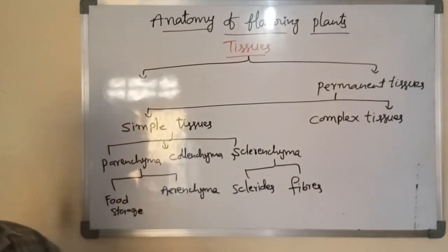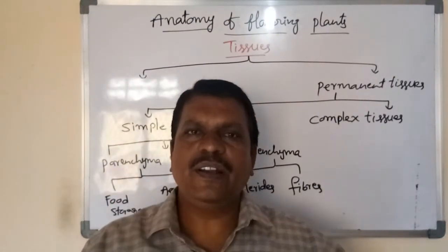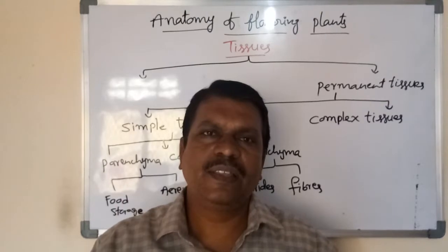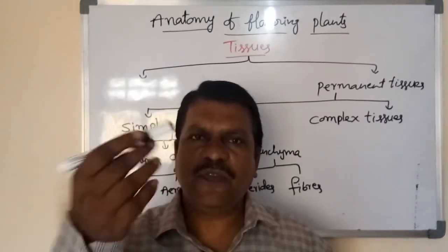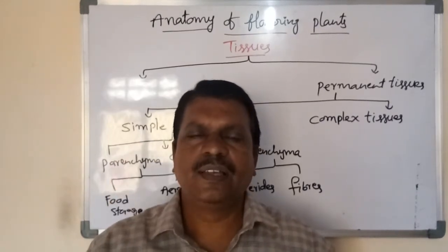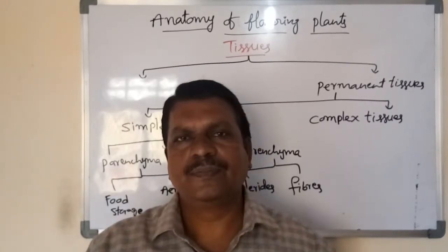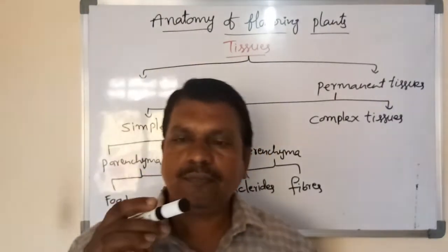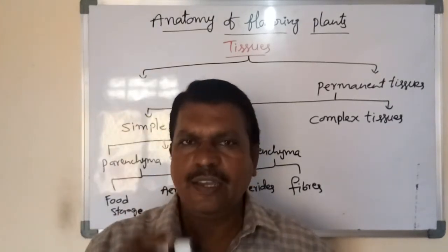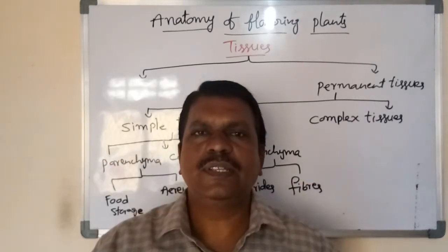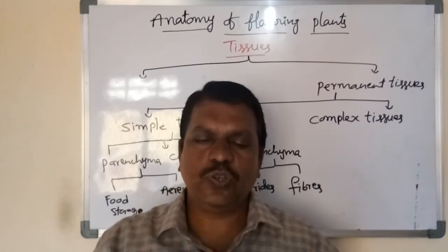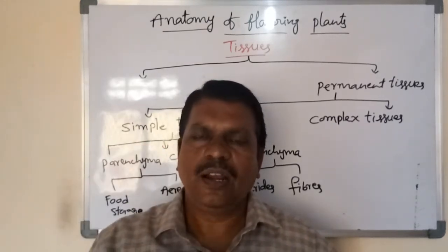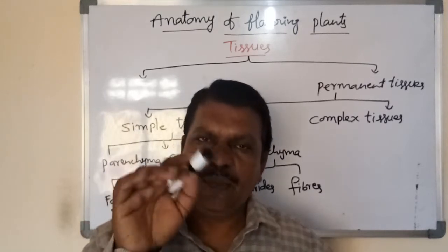First, parenchyma. It is a living tissue, fundamental tissue, basic tissue. Cells are loosely packed with a small intercellular space — that is conspicuous. Parenchyma performs several functions; you should read its general characteristic features. The total plant body is basically made up of parenchyma, hence it is known as fundamental tissue or basic tissue. Parenchyma is present in root, stem, leaf, fruit, flower, etc. In case of leaf, parenchyma performs photosynthesis — example: mesophyll tissue, which differentiates into palisade parenchyma and spongy parenchyma. Both tissues contain large numbers of chloroplasts containing chlorophyll pigments, thereby performing photosynthesis.